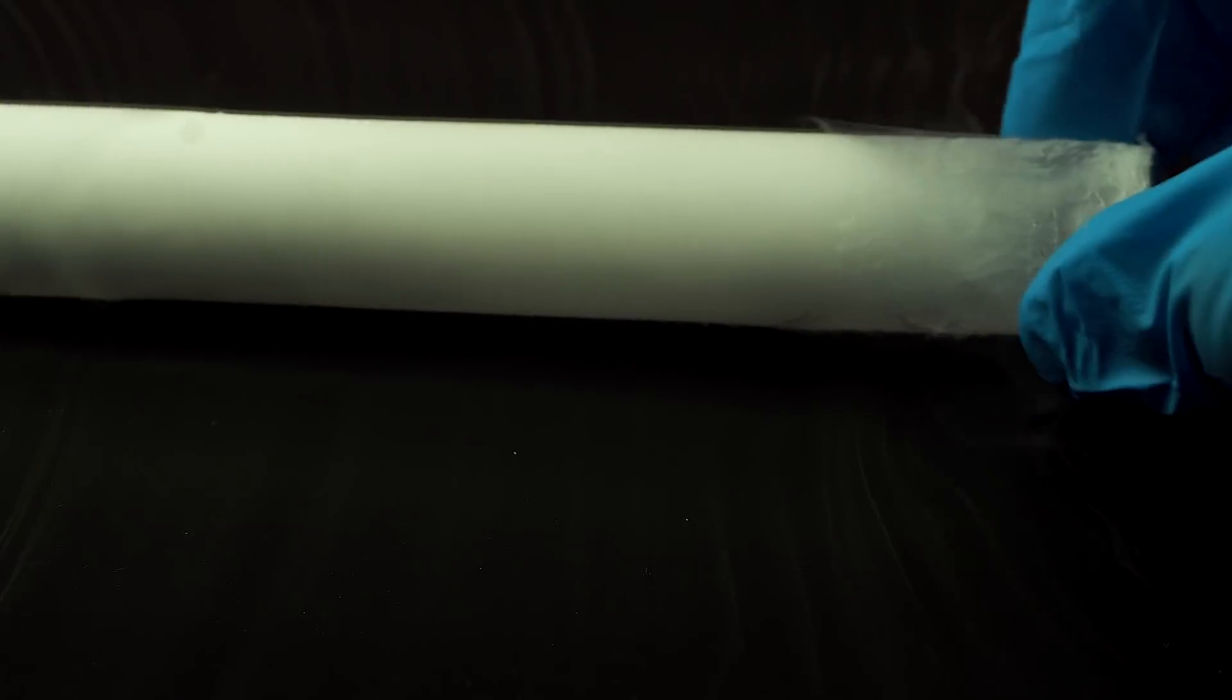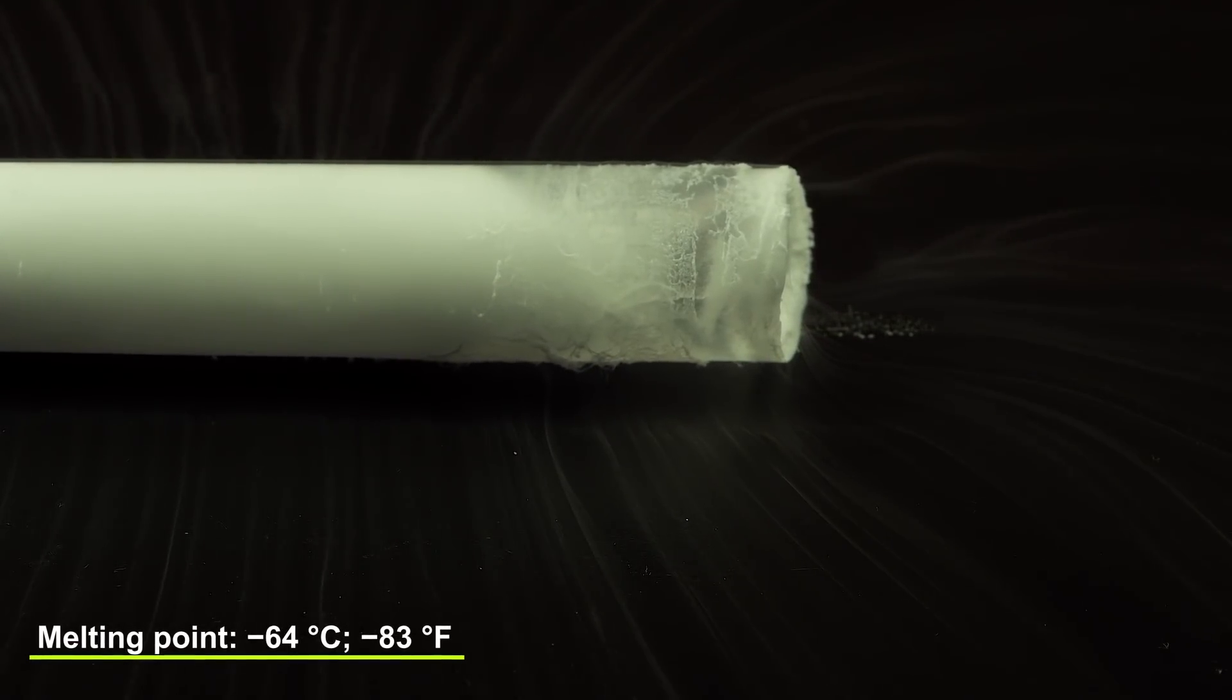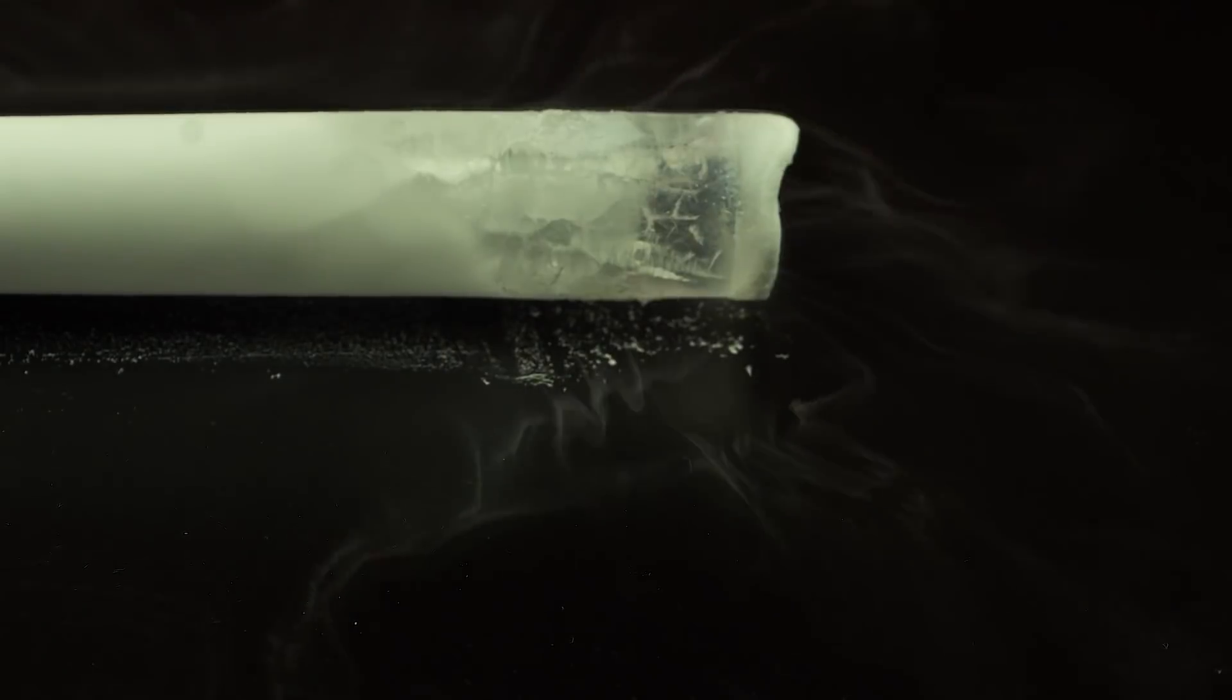Thanks for watching it up to the end. So the last thing I want to show you is a really fascinating reaction with lithium and solid sulfur hexafluoride. Its melting point is minus 64 degrees Celsius, so it's not very hard to freeze it and then use. By the way, just like dry ice, sulfur hexafluoride sublimates, meaning it goes from solid to gas state without transition to liquid.